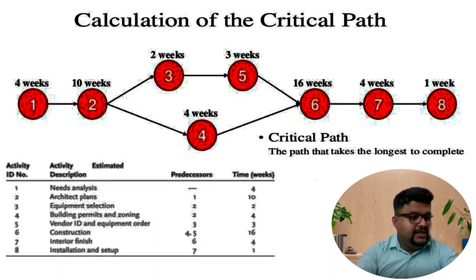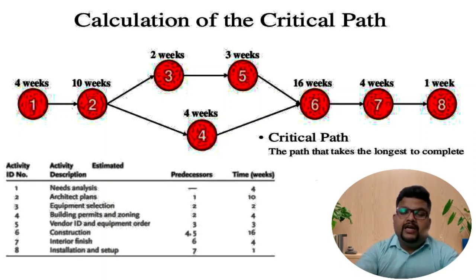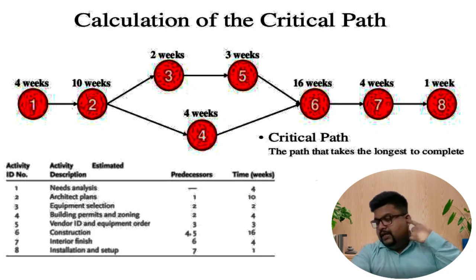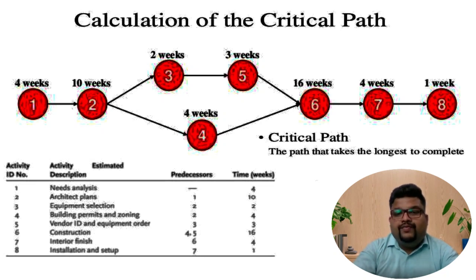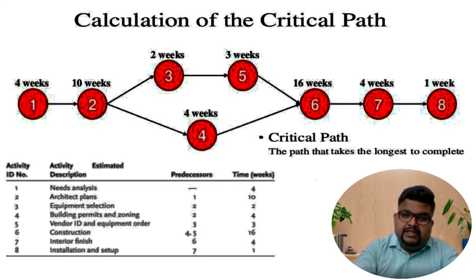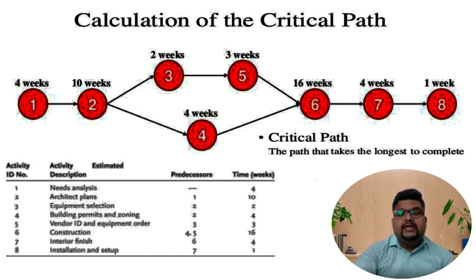To consider the critical path from the diagram, every node has a number shown at the top indicating days, weeks, or months required for completing that task. After completing a task, only the next task begins. When task 2 starts, there can be two parallel branches — a division of activities and time — so both activities can be done simultaneously. For example, if node 4 has 4 weeks and branches 3 and 5 have 2 weeks and 3 weeks, the total is 5 weeks. The branch requiring the most time — 5 weeks — from point 2 to point 6 is the critical path.